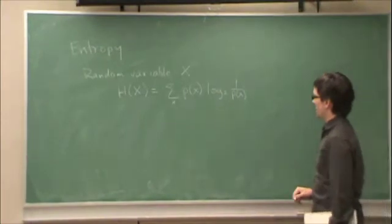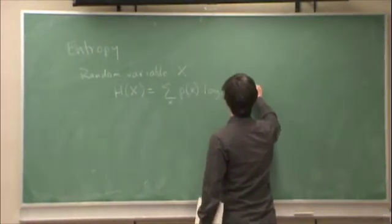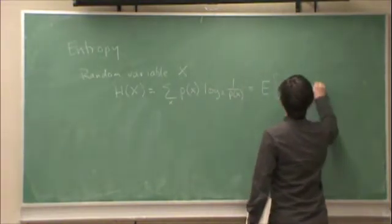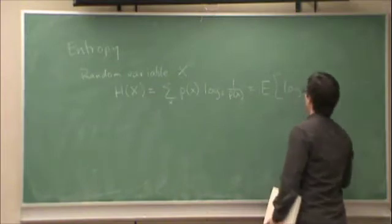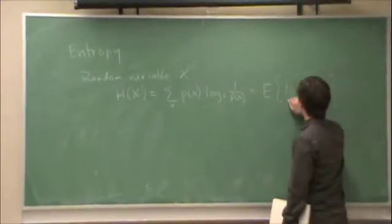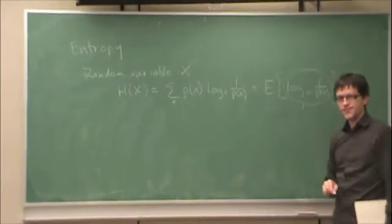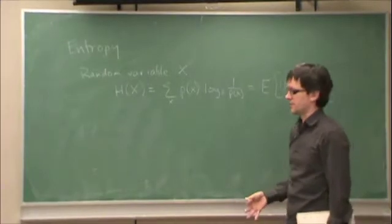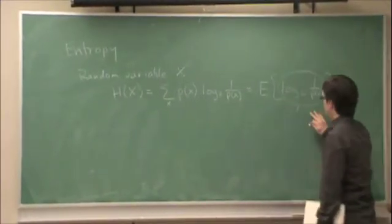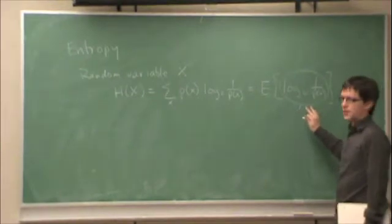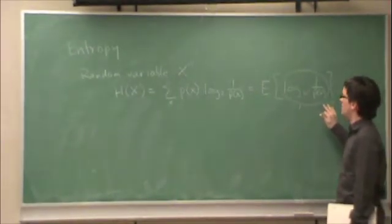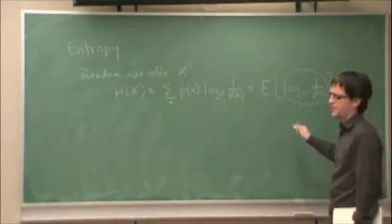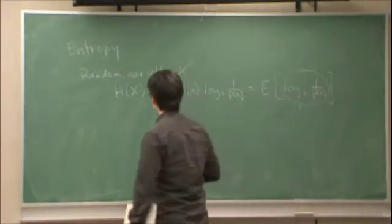So it's worth noting that this can be rewritten as the expected value, or the average, of log 2 over p of x. And remember that this quantity, we call this the self-information. And the self-information, if one is encoding a source code, the self-information is, on average, the optimum number of bits that one should assign to each source letter in x.